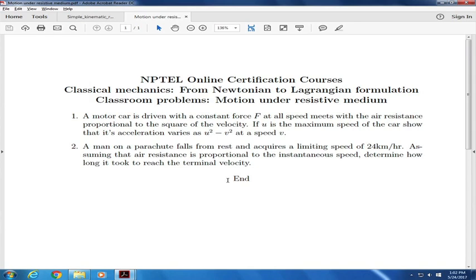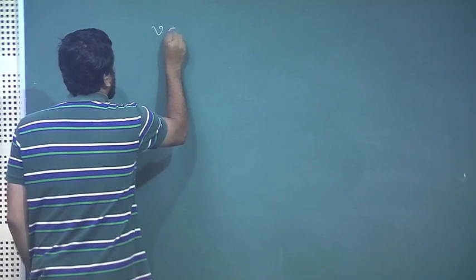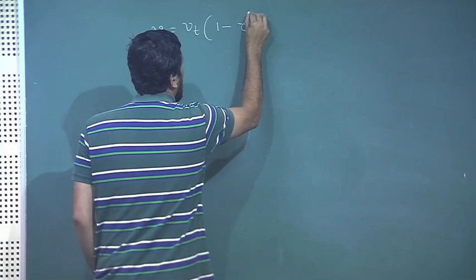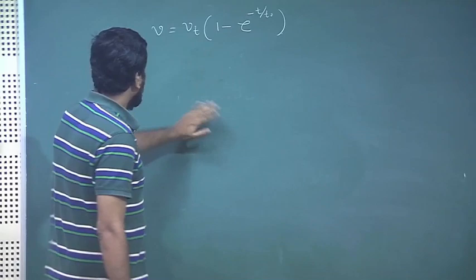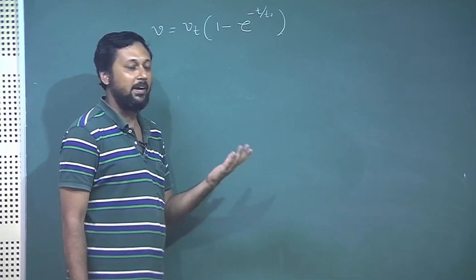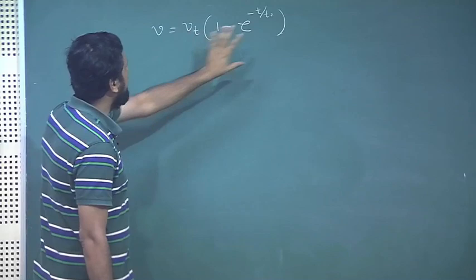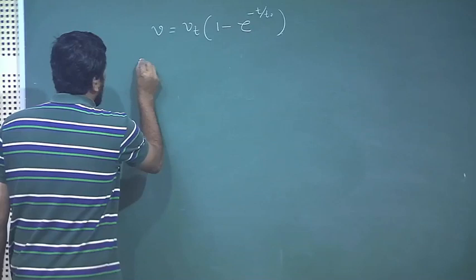The next problem: a paratrooper falling from rest acquires a limiting speed of 24 km/h. Assuming air resistance is proportional to instantaneous speed, determine how long it took to reach terminal velocity. We recall that v = v_t(1 - e^(-t/t_0)), which was the expression irrespective of whether we took -kv or -mkv for the force; only v_t and t_0 differ.